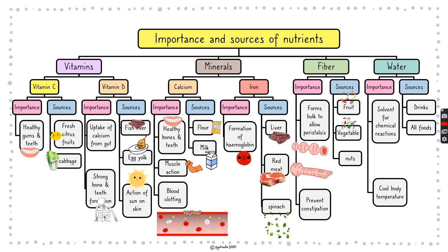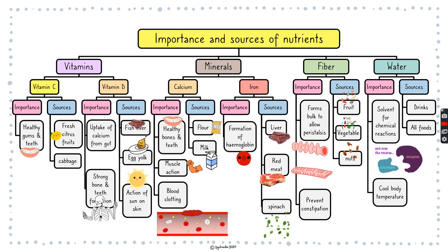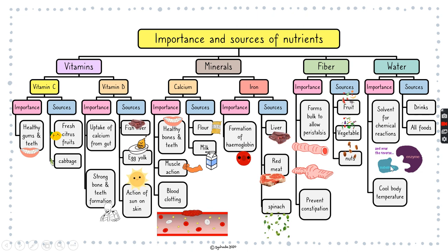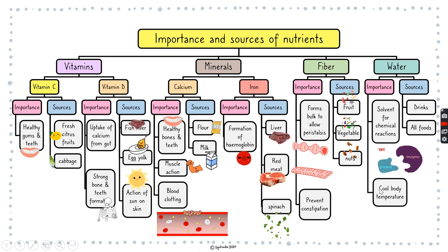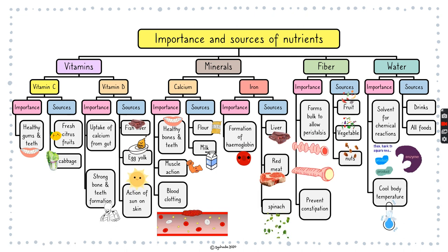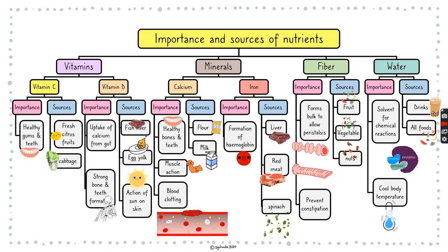So fiber is really important to prevent constipation, and sources of fiber are fruit, vegetables, and nuts. Lastly, water is also a nutrient. It's important because it acts as a solvent for chemical reactions — an example of a chemical reaction in your body is enzyme action. Enzymes speed up chemical reactions, and for them to form the enzyme-substrate complex, the substrate needs to move to the enzyme, and you need that solvent for it to be able to move. Water is also important to cool your body down. Sources of water include any drinks you like, and also all foods contain water too.